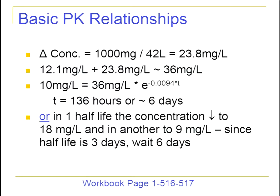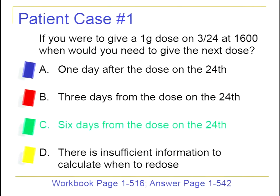Another way to think through this: the half-life is about 72 hours since the concentration went from roughly 24 down to 12 in three days. Starting at 36, one half-life (72 hours) brings it to 18, and another half-life brings it to nine — a total of about six days. So the answer to this question is C: six days from the dose on the 24th, you're probably ready to give another dose.